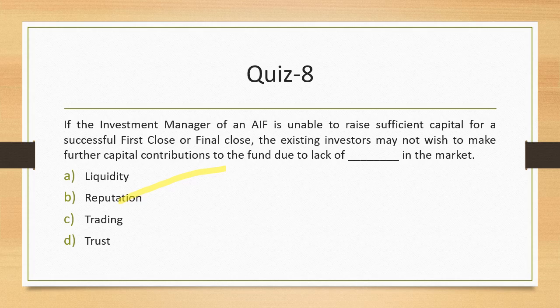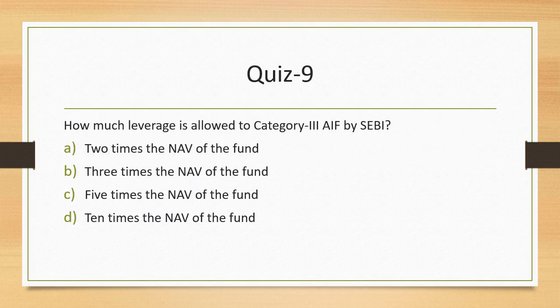Question 9: How much leverage is allowed to category 3 AIFs by SEBI? Leverage means how many times you can take a position backed by the assets you own. This is very conservative — only 2 times the NAV of the fund. Neither 3 times, nor 5 times, nor 10 times.